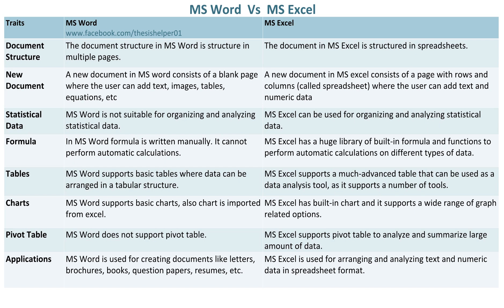In MS Word, a formula is written manually and it cannot perform automatic calculations. Whereas, MS Excel has a huge library of built-in formulas and functions to perform automatic calculations on different types of data.